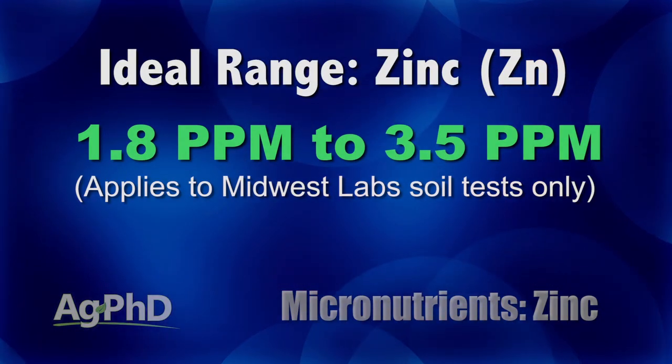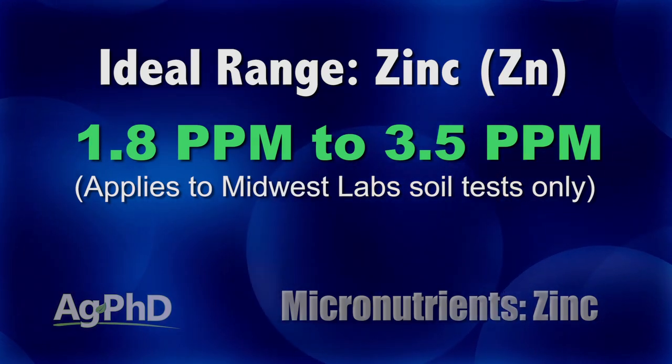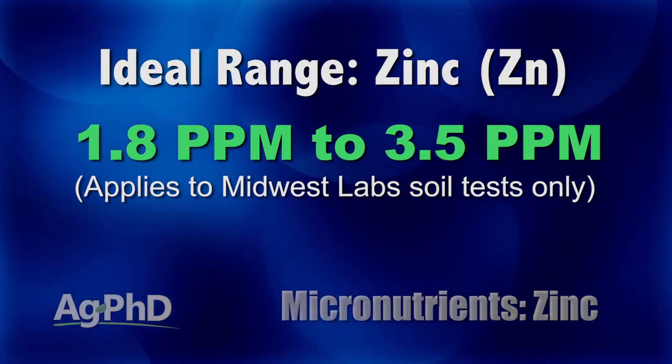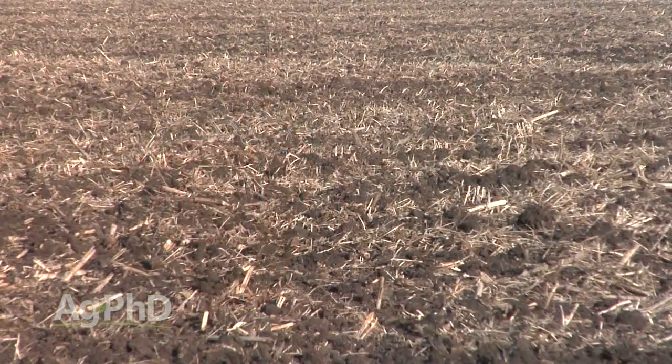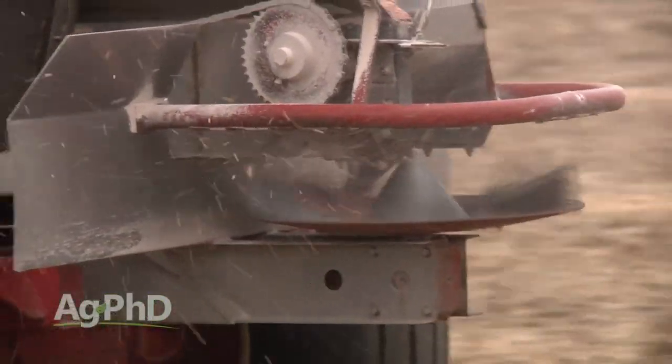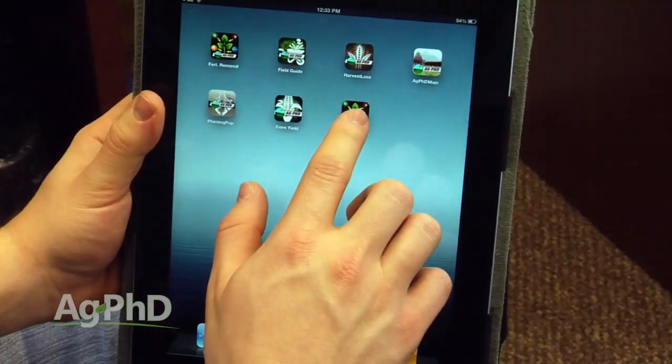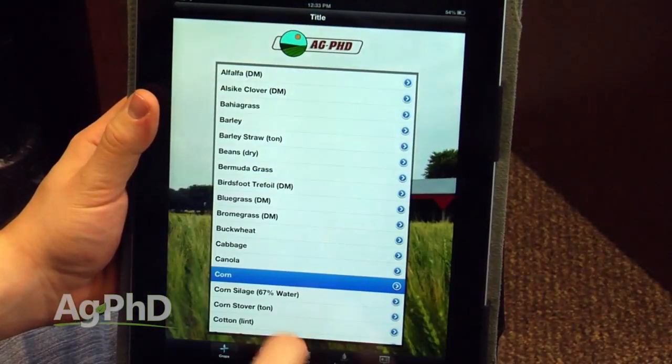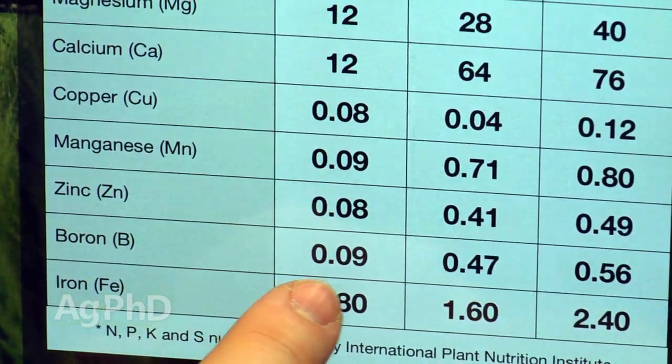Here's what we're looking for: 1.8 to 3.5 parts per million on a Midwest Lab soil test. Every lab has a little different extraction process, maybe give you a little different number, so we're just talking about Midwest Labs. We'd really like to see that zinc level in the 1.8 to 3.5 parts per million range for corn, soybeans, or wheat. Embarrassingly, we've had some fields where it's a half a part per million, or 0.1 parts per million is our record low. If it's 0.1 and you need to be at 1.8, you can imagine how that's affecting yield. It doesn't cost a lot of money because we're only talking about a few pounds per acre. You can go to the Ag PhD Fertilizer Removal App — it's a free app — and look at how much zinc the crop actually needs.